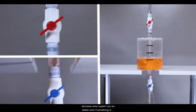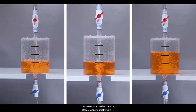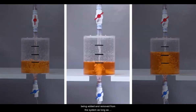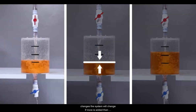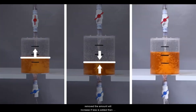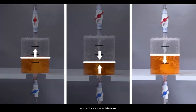Less is being added than is being removed, so the liquid will decrease. A system can be stable even if something is being added and removed, as long as the amount being added equals the amount being removed. But if the amount being added or removed changes, the system will change. If more is added than removed, the amount will increase. If less is added than removed, the amount will decrease.